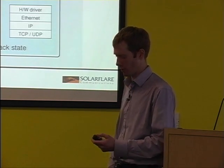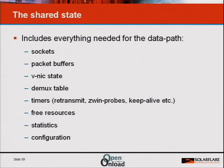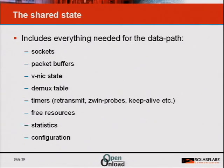Surviving process exit is straightforward: the process goes away but the kernel state doesn't until all the sockets have reached the closed state. What's in the shared state? Absolutely everything you could want to do anything performance-critical at user level: sockets, buffers for transmitted and received packets, state to manage the hardware interface, the demux table (to resolve packet headers to the correct socket state), timers for TCP retransmit and zero-window probes, tracking of free resources, statistics, and configuration.